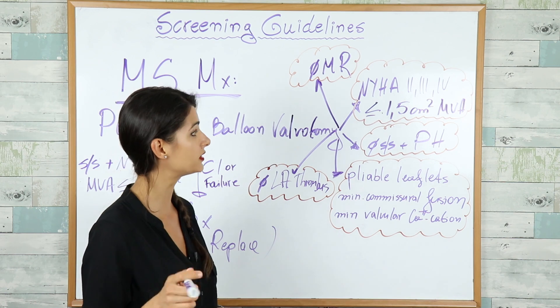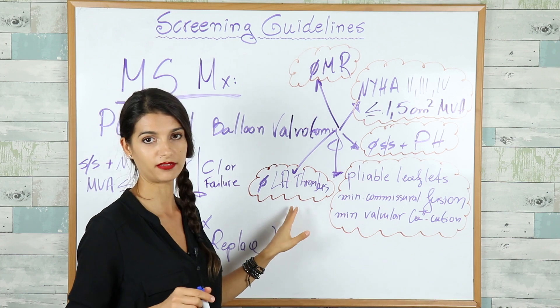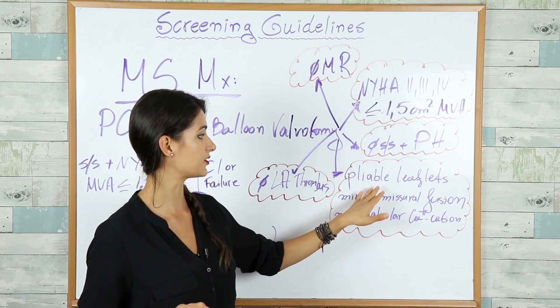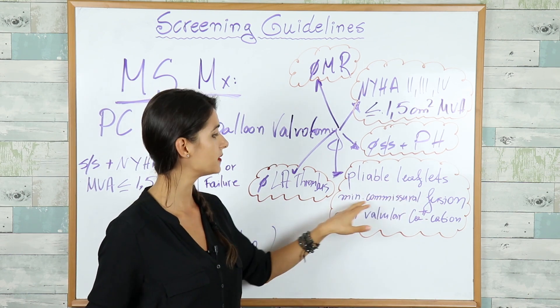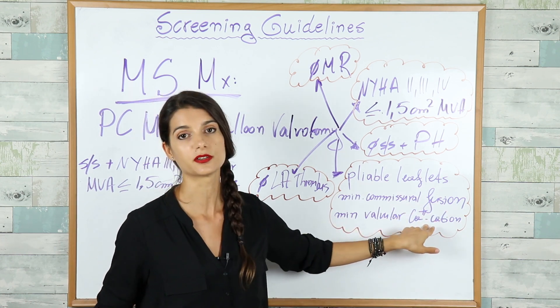They should not have concomitant mitral regurgitation. They also should not have left atrial thrombus, and their leaflets have to have favorable characteristics like pliable leaflets, minimal commissural fusion, and minimal valvular or subvalvular calcification.